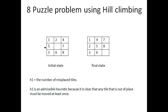We will solve a problem — the eight puzzle problem — and observe the local maxima weakness during this solution. Here is our initial state: the eight puzzle problem has nine boxes, eight of which have digits from one to eight. The arrangement of digits is: one, two, four, five, seven, three, six, eight. In our final state, the arrangement is: one, four, seven, two, five, eight, three, six. We will use heuristic values, as hill climbing uses heuristic values to solve problems.